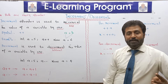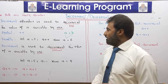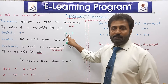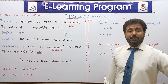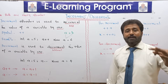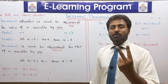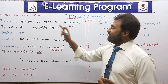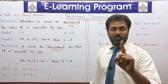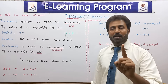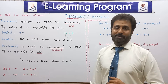Students, jo operators jinke liye do operands required hain — these are called binary operators — just like addition, subtraction, multiplication, or relational operators greater than, less than. Inke liye hume do operand, do variable chahiye. But increment and decrement humare paas aise operators hain jinke liye just ek operand chahiye. So these operators are called unary operators.